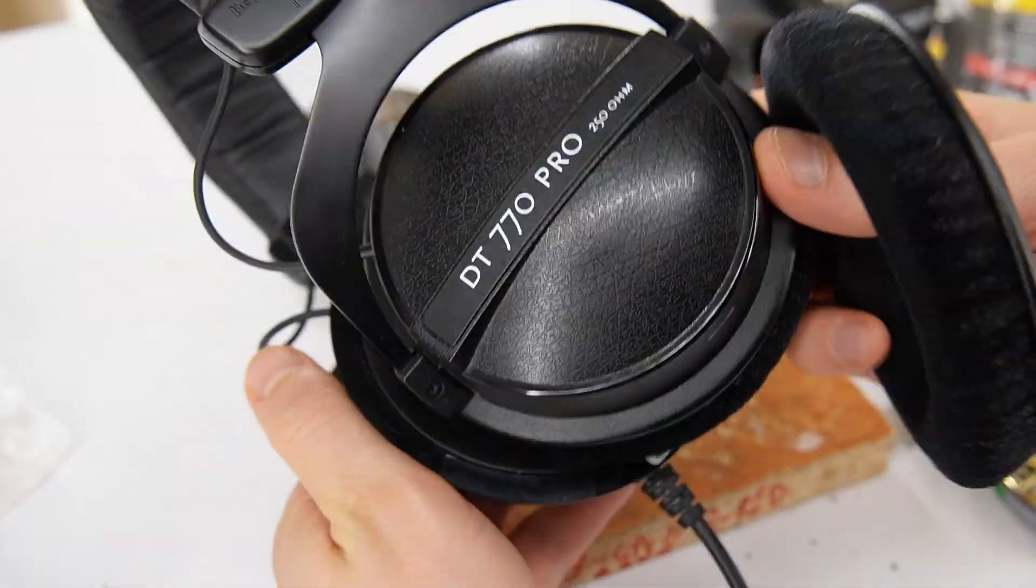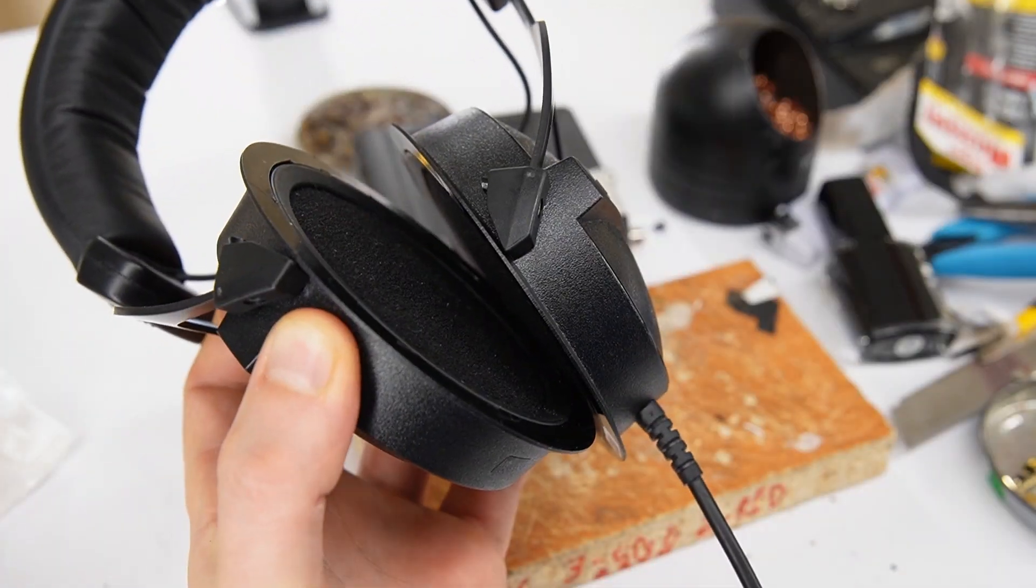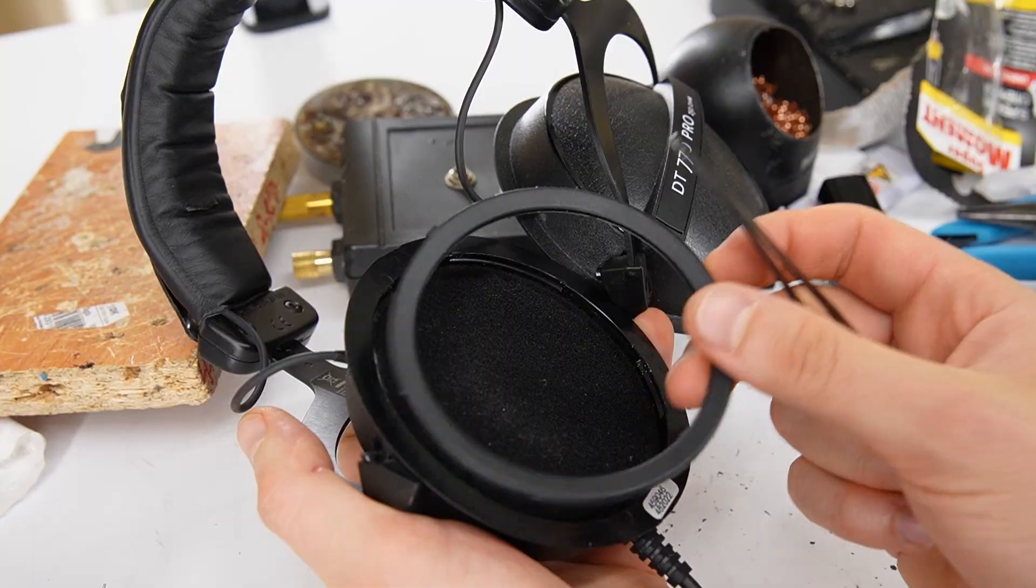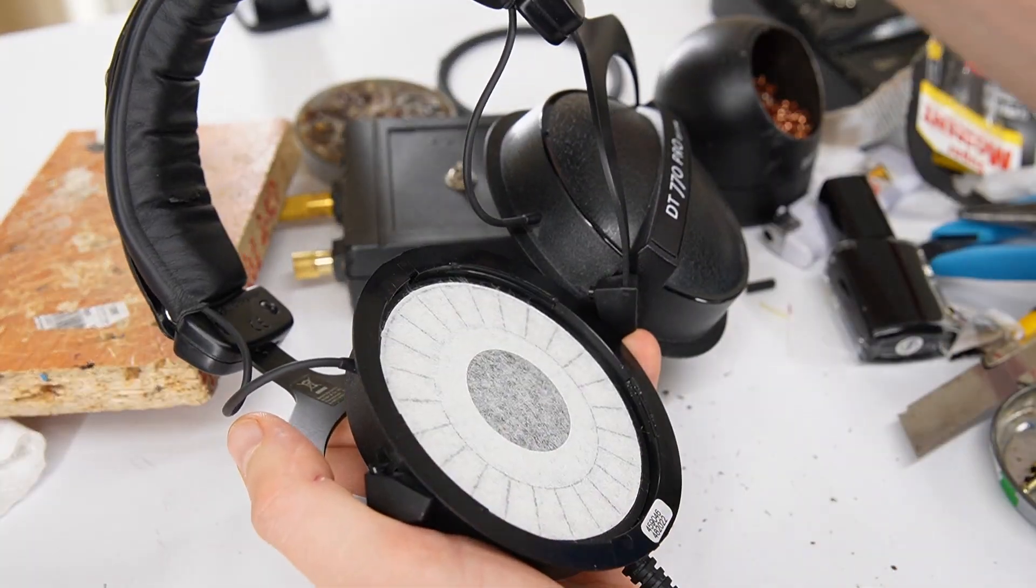Start by removing both earpads so you don't damage them while upgrading the headphones. Then carefully remove the locking ring and the foam filter.